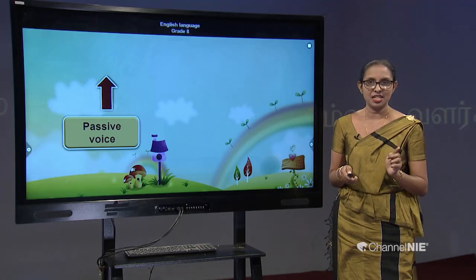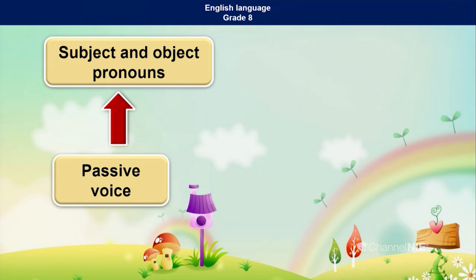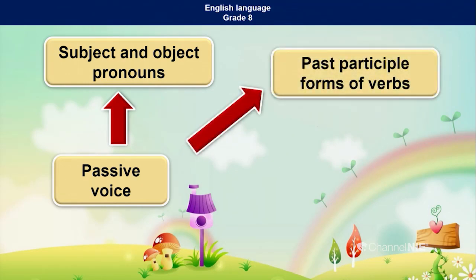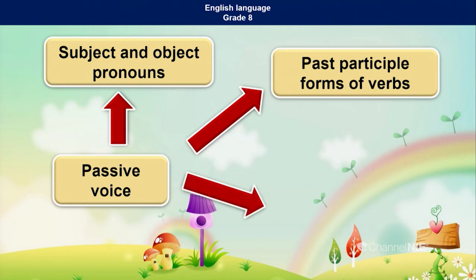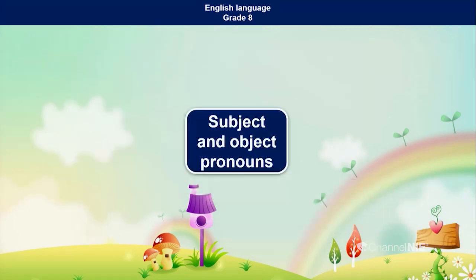The first thing is subject and object pronouns. You have to know the subject and object pronouns, then you have to know past participle forms of verbs, and then you have to know forms of the verb 'be' — that is the most important thing. Then we will move on to see what the subject and object pronouns are.